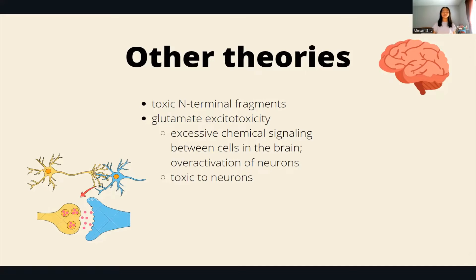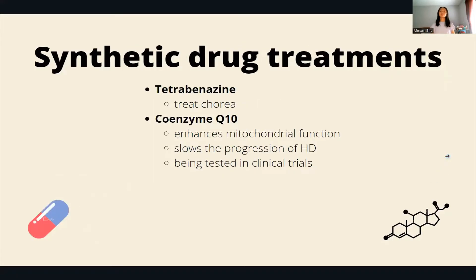There are no current permanent treatments, but there are some treatments for Huntington's symptoms. One that has been tested and approved is tetrabenazine, which treats chorea. A second treatment currently being tested is coenzyme Q10, which enhances mitochondrial function and slows down the progression of Huntington's.